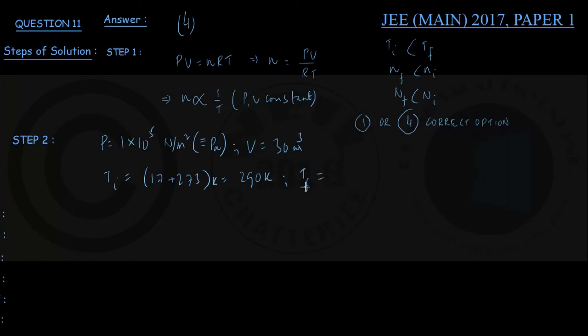Similarly the final temperature Tf in Kelvin scale will be 27 plus 273 Kelvin, that is 300 Kelvin. And except for this you also require the values of universal gas constant and Avogadro's number. I think they are given in question paper itself.